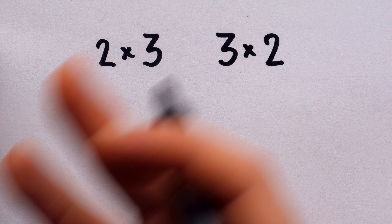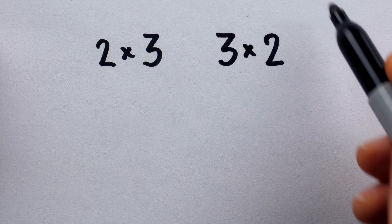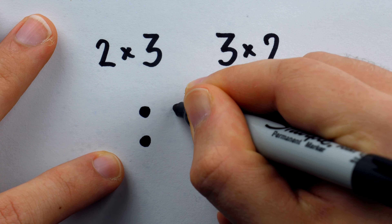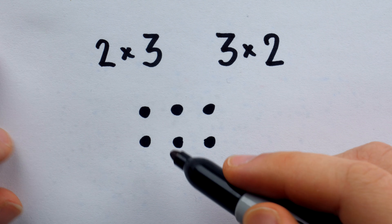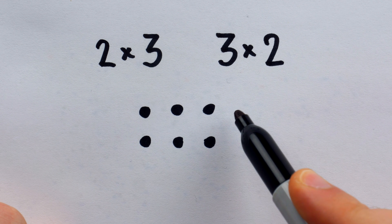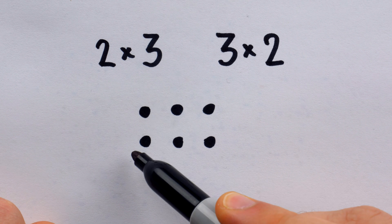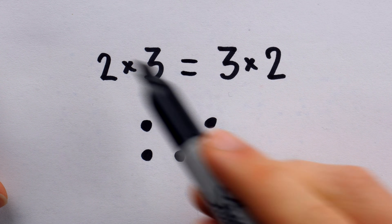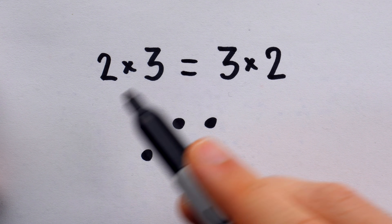For example, the commutativity of multiplication. How do we know that 2 times 3 is the same as 3 times 2? Well, when I look at a rectangular array of 6 dots, I could count the number of dots in this array in two manners. I could look at it as 2 groups of 3, or I could look at it as 3 groups of 2. So clearly, 2 times 3 is equal to 3 times 2 — they're both just different ways of counting the number of dots in this rectangle.